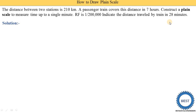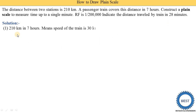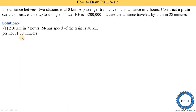First, we find out what distance is covered in one hour. 210 kilometers in seven hours means the speed of the train is 30 kilometers per hour — that is, in 60 minutes, the train covers 30 kilometers. So, 210 divided by 7 gives us 30.